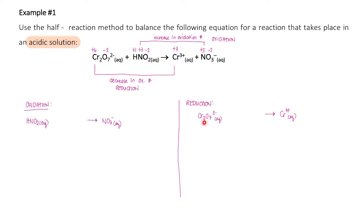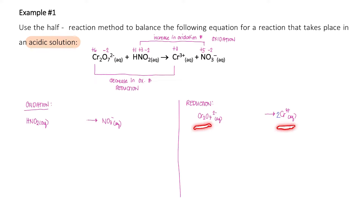For chromium, we have two atoms on the left side — from the subscript of two in the formula with a coefficient of one. On the right side we have only one chromium atom. To balance, we place a coefficient of two in front of Cr³⁺. Remember, we add coefficients, not subscripts. Now we have two chromium atoms on both sides.